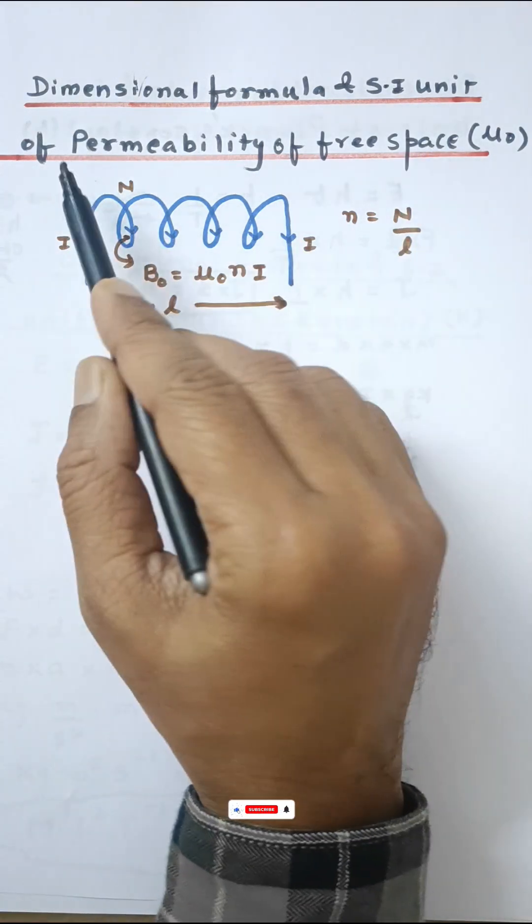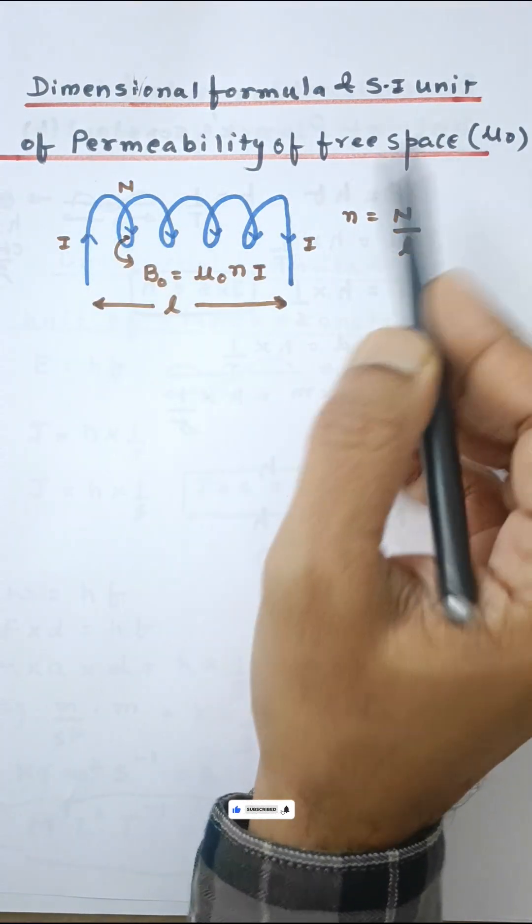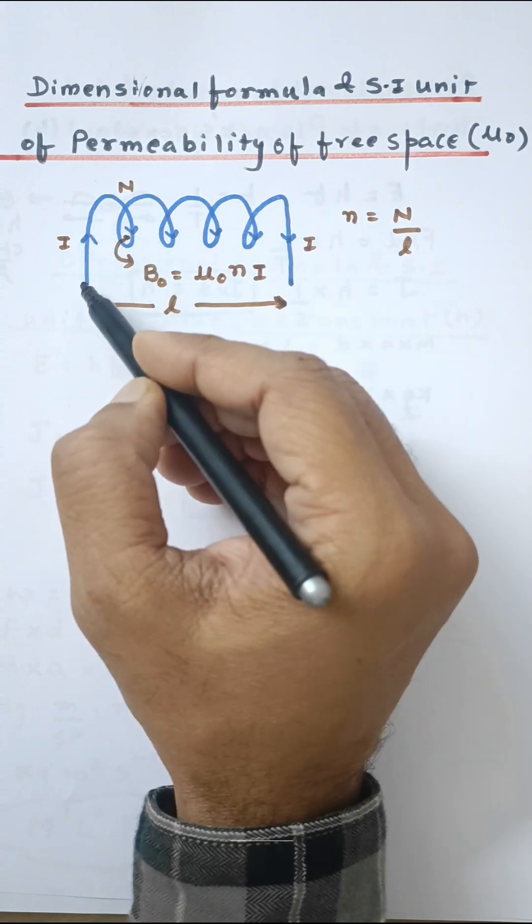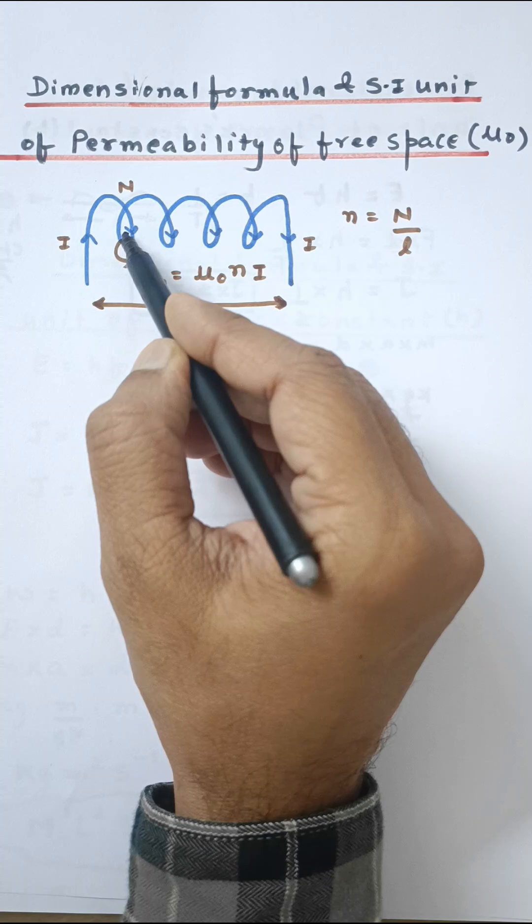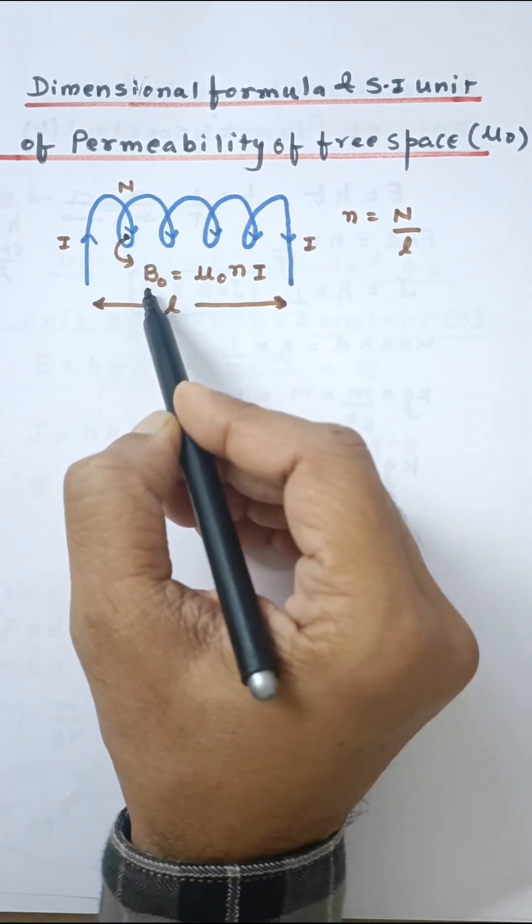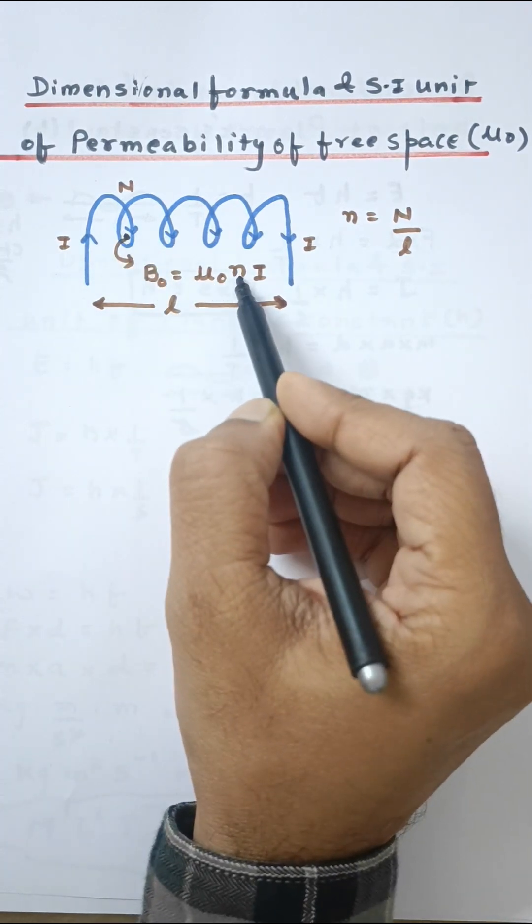I am going to discuss the dimensional formula and SI unit of permeability of free space, which is μ0. For that, I am going to use this concept where a current carrying solenoid with current I has a magnetic field at its center B0 that is equal to μ0 times small n times I.